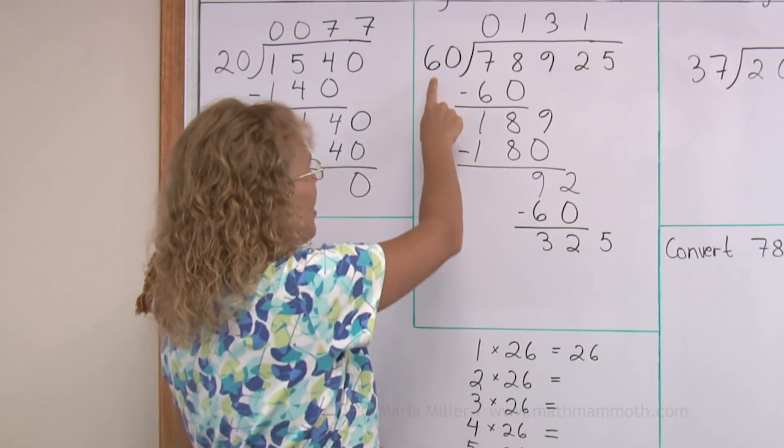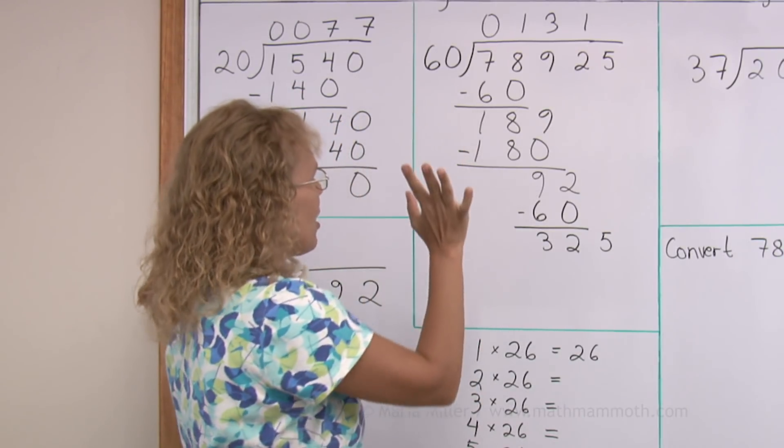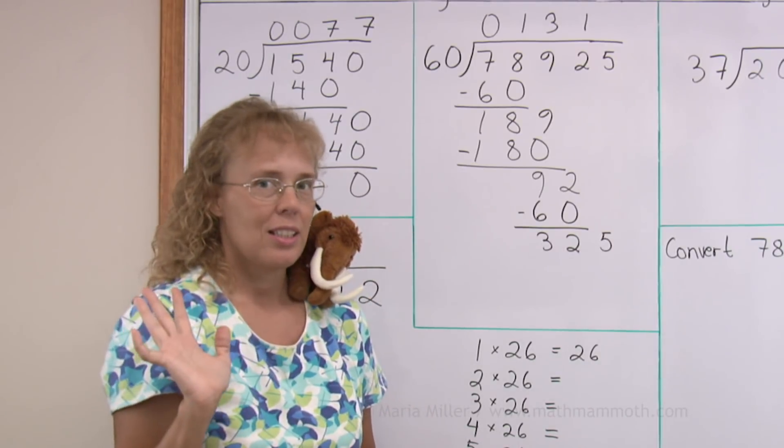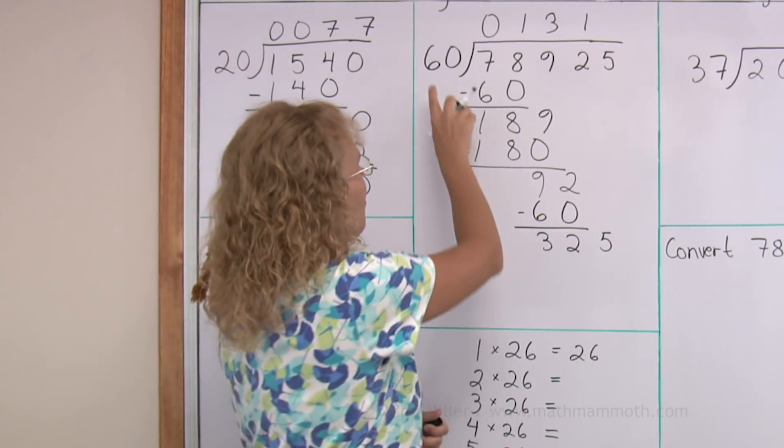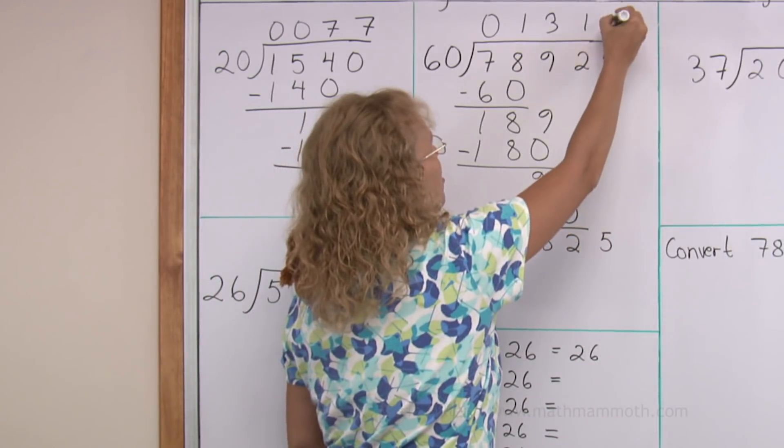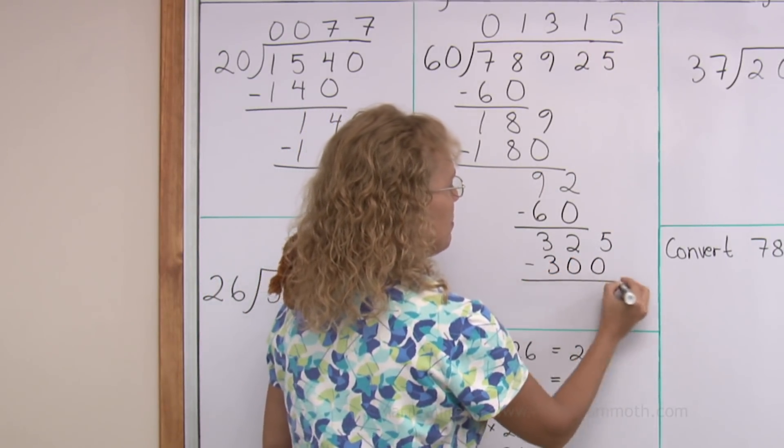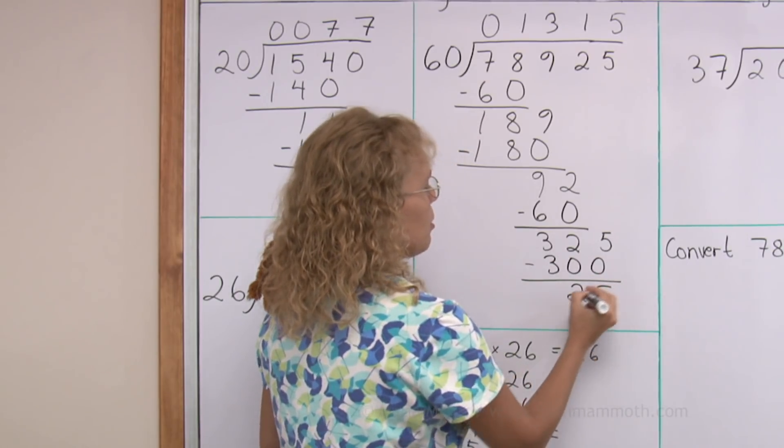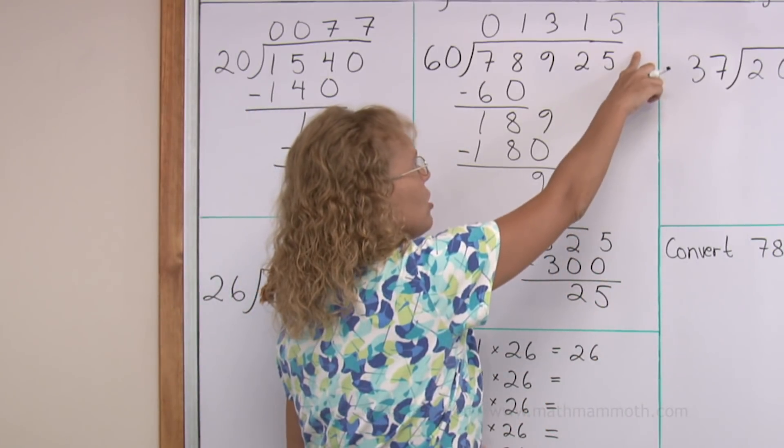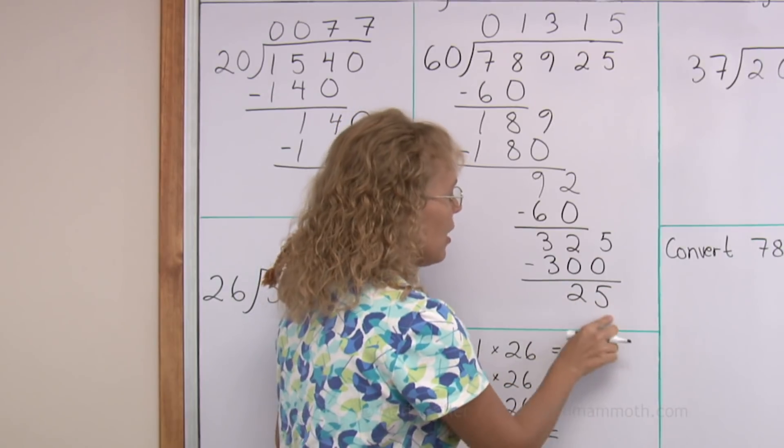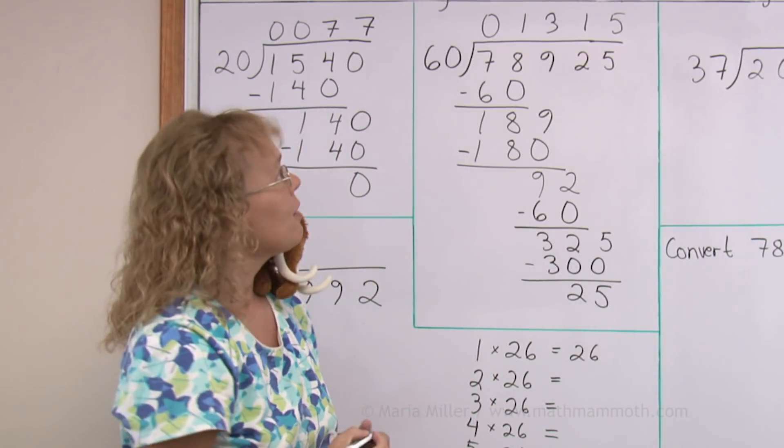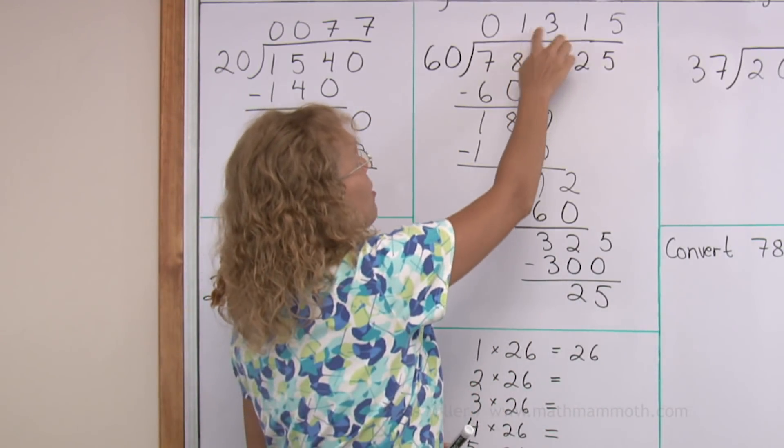Just keep multiplying by 60. 3 times 60. 4 times 60. 5 times 60. 6 times 60. 5 times 60 is 300. It goes 5 times. And subtract 25. And there are no more digits to drop down. So, we're done. Our remainder is 25. And our answer is 1350.